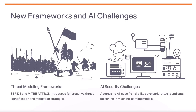New frameworks and AI challenges. Threat modeling frameworks like STRIDE and MITRE ATT&CK provide a structured approach to proactively identify and mitigate potential threats, helping organizations be more proactive rather than just reacting to incidents. Identifying and addressing AI-specific risks like adversarial attacks and data poisoning is increasingly important as machine learning models become more widely deployed. Securing AI systems requires specialized techniques beyond traditional cybersecurity approaches.